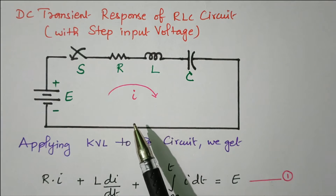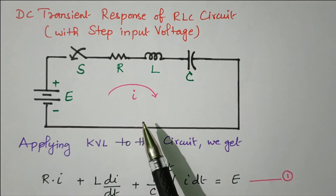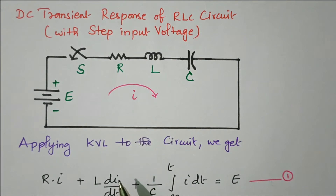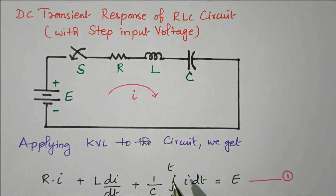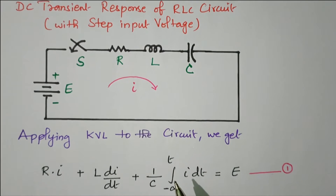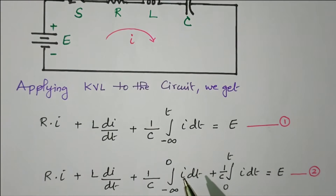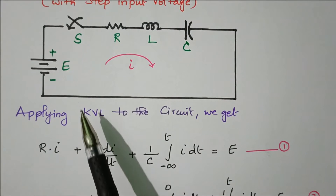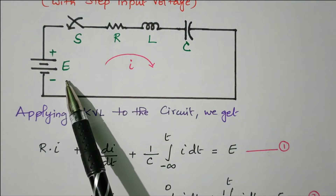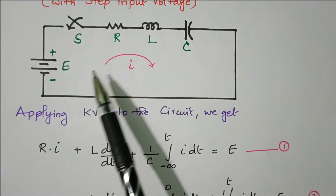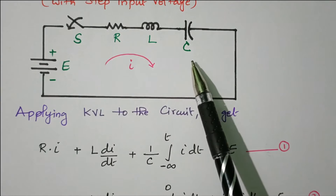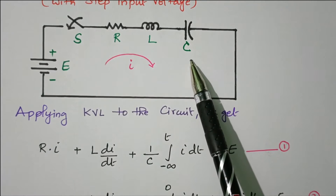We need to find the differential equation. By taking Laplace and inverse Laplace, we can obtain the transient time response. Now applying KVL to the circuit — Kirchhoff's voltage law states that the supply voltage E equals the voltage drop across the resistor, inductor, and capacitor. So this is the KVL equation.